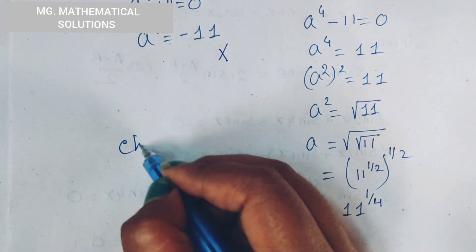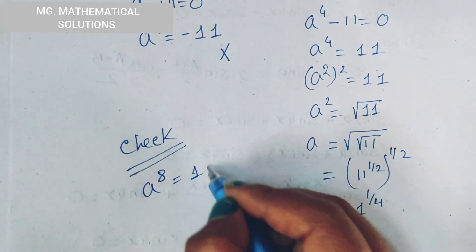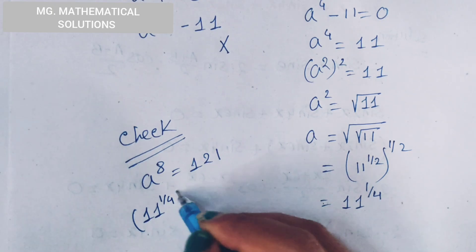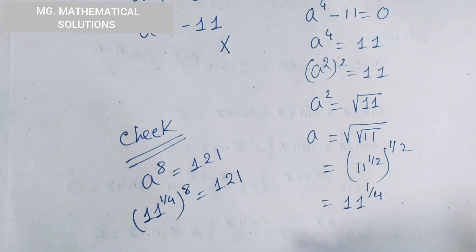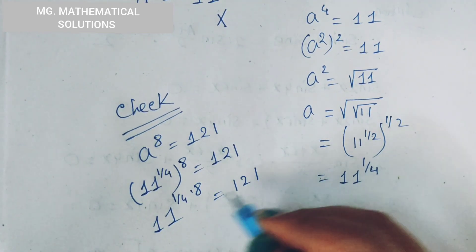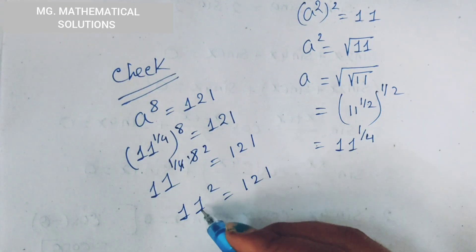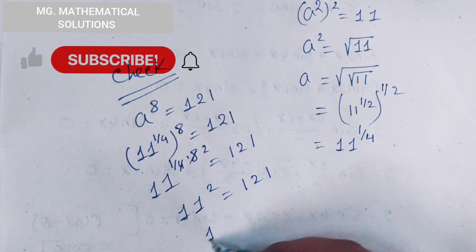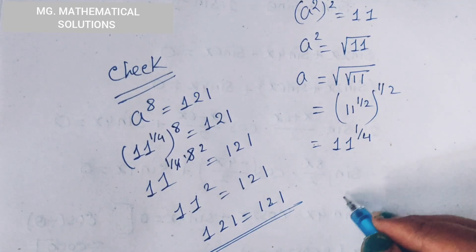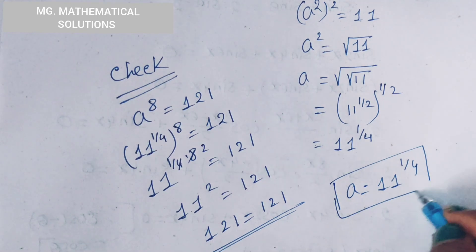Now check the value. The given equation is a to the power 8 equal to 121. We put the value: 11 to the power 1 by 4, whole to the power 8, equal to 121. So 11 to the power 1 by 4 times 8 equals 11 to the power 2, equal to 121. Since 11 squared equals 121, left hand side is equal to right hand side. Hence a equal to 11 to the power 1 by 4 satisfies the given equation. So this is the final answer.